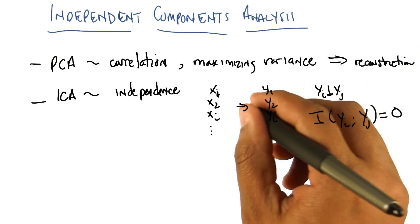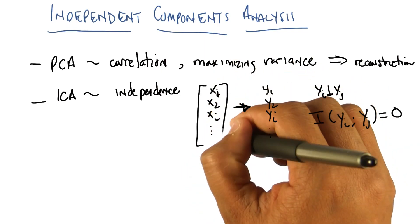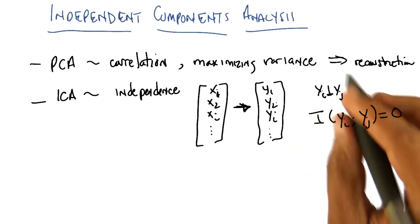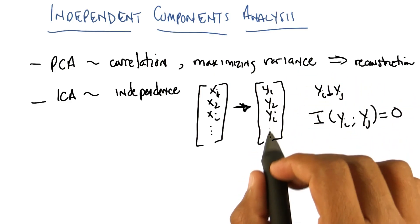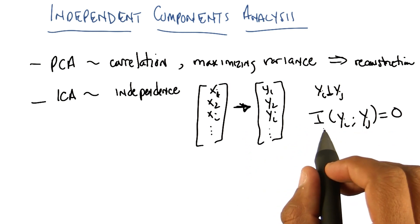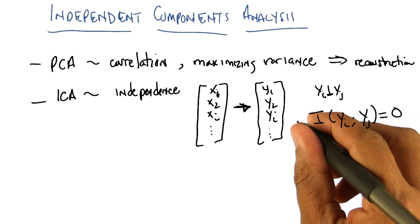So I find some linear transformation here, which is going to take my original feature space, which I'm representing with these X's, and transform it into a new feature space such that if I were to treat each of these new features as random variables and compute their mutual information, I would get for all pairs a mutual information of zero.